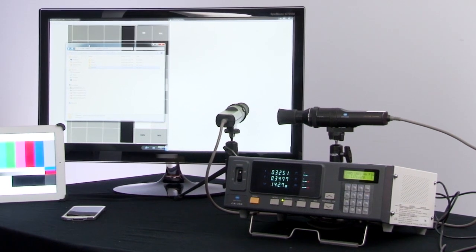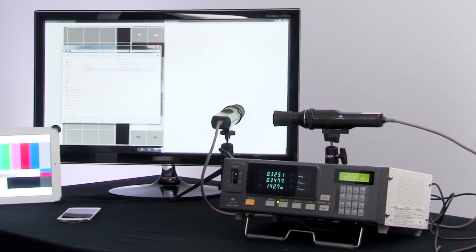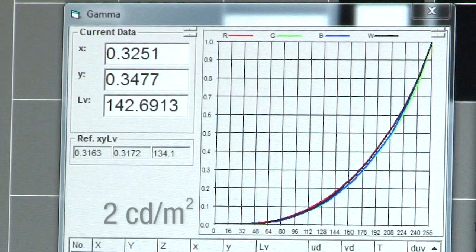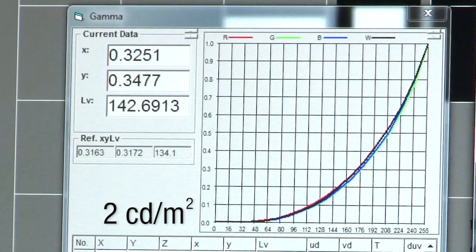High-intensity gamma measurements can be taken up to two candelas per meter squared, at 20 measurements per second.